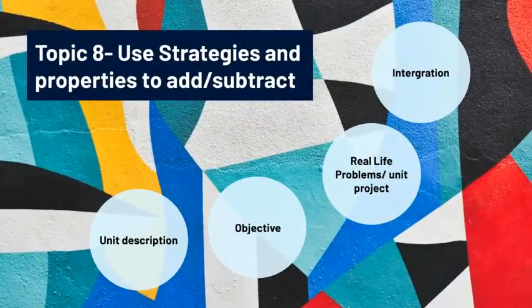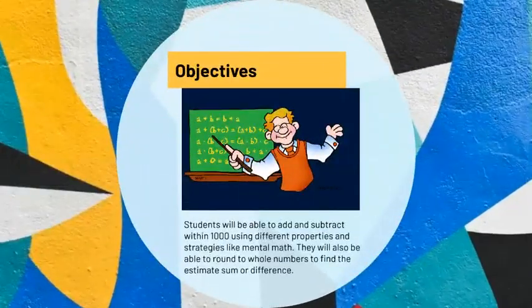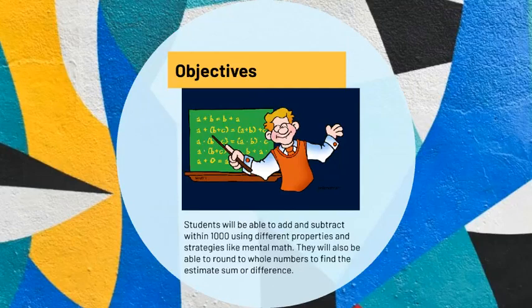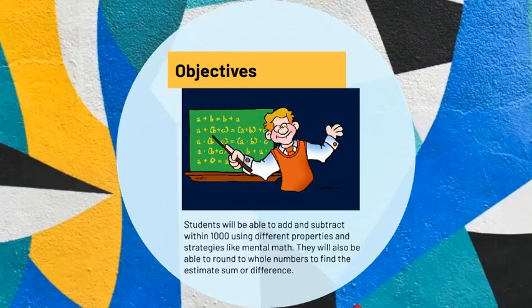Let's take a look at what our objective is going to be. Students will be able to add and subtract within 1000 using different properties and strategies like mental math. This means we're going to add and subtract all in our minds without using paper and pencil. We're also going to be able to round whole numbers and find the estimate for the sum and differences. So we're going to use estimation to add and subtract as well — we're going to make it even harder, but we're smart enough to do it.